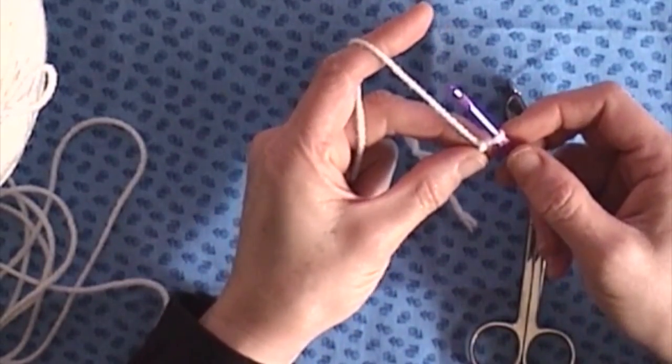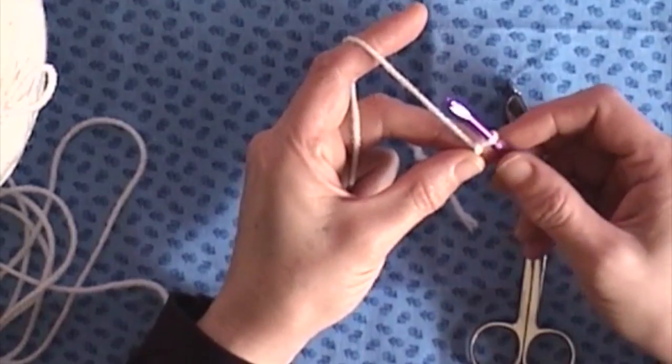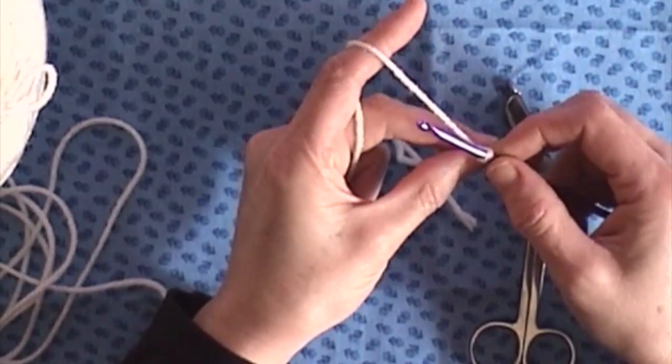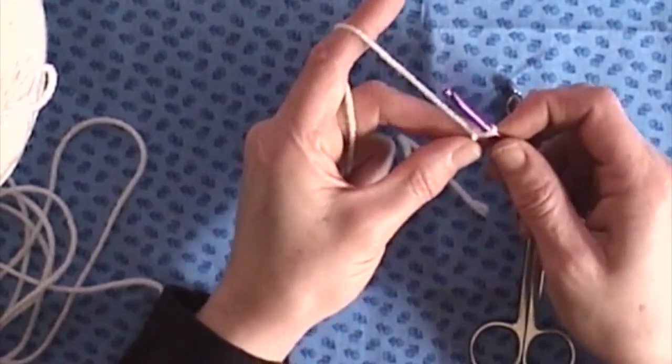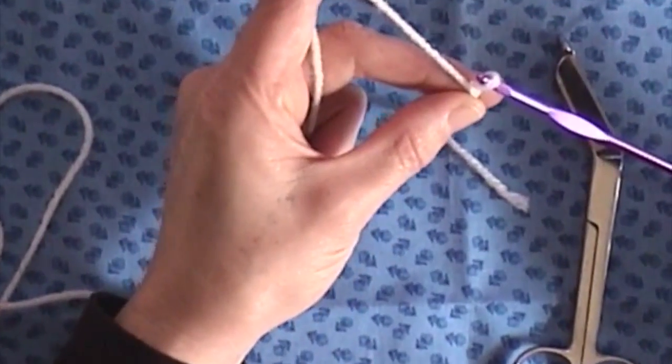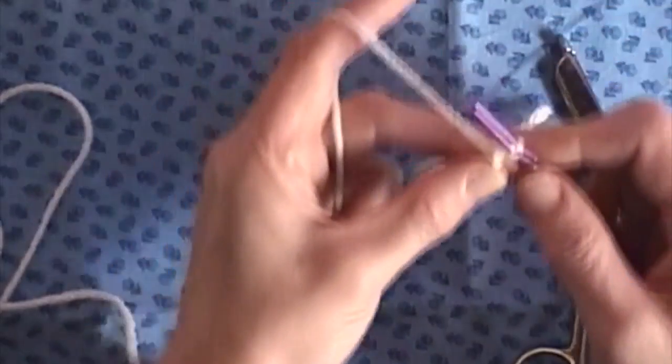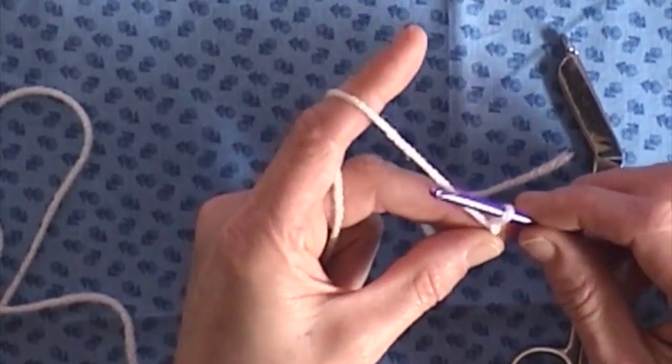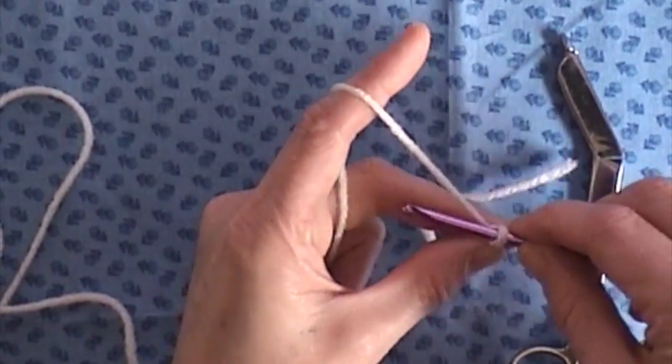Basically, with your loop on your crochet hook, you are going to grab your yarn. Let me zoom in just a little bit so you can see what I'm doing. Okay, you just go under the yarn.